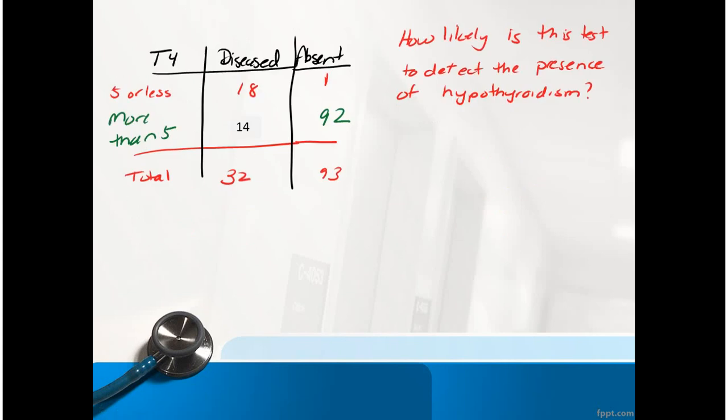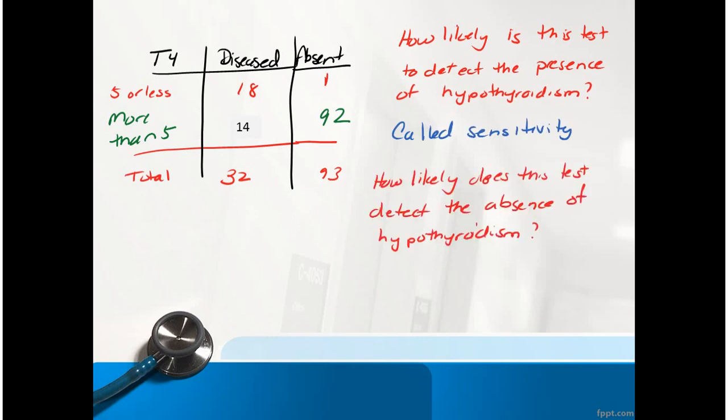So there's two questions we have to ask. The first is how likely is this test to detect the presence of hypothyroidism? That means you correctly identified those people who were sick. That's called sensitivity. You also want to know who correctly diagnosed people who didn't have the disease. And you say, well, why do we care about that? We really just care about people who have the disease.